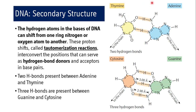Thymine and adenine are bound together by two hydrogen bonds, while guanine and cytosine share three hydrogen bonds. Adenine and guanine are purines; cytosine and thymine are pyrimidines. Hydrogen atoms in the bases can shift between ring nitrogen or oxygen atoms — a tautomerization reaction. The guanine-cytosine bond with three hydrogen bonds is more stable and harder to break than the adenine-thymine bond.